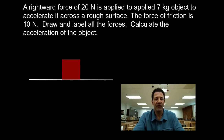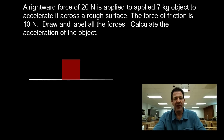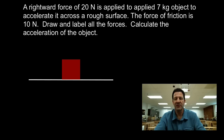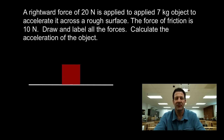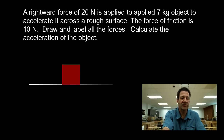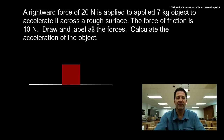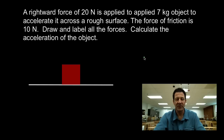I'm going to run through three different examples. The first one says we have a rightward force of 20 Newtons applied to an object that has a mass of 7 kilograms. It's accelerating across this rough surface, and the force of friction is 10 Newtons. We want to draw and label all the forces and calculate the acceleration of the object.